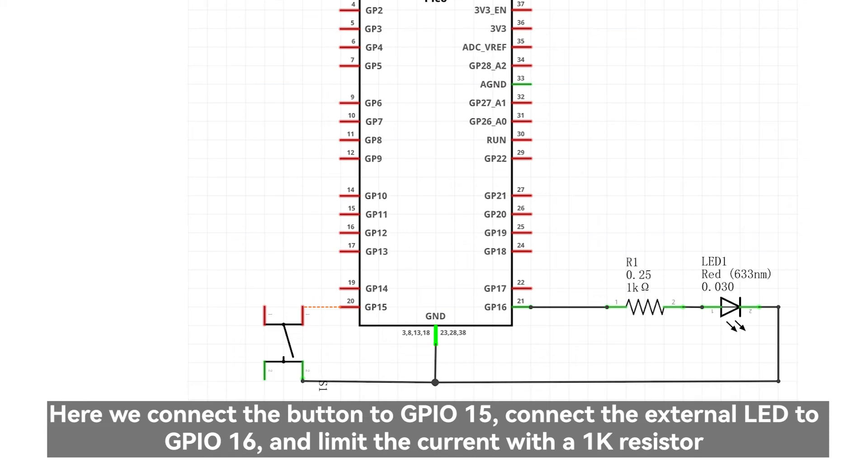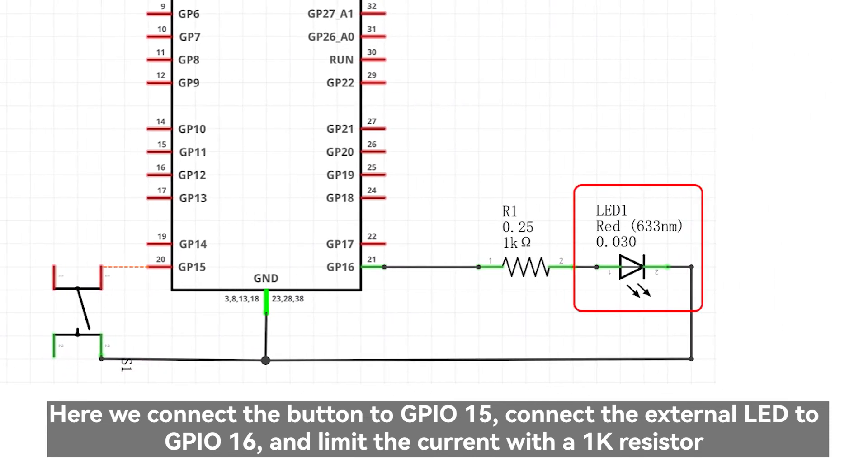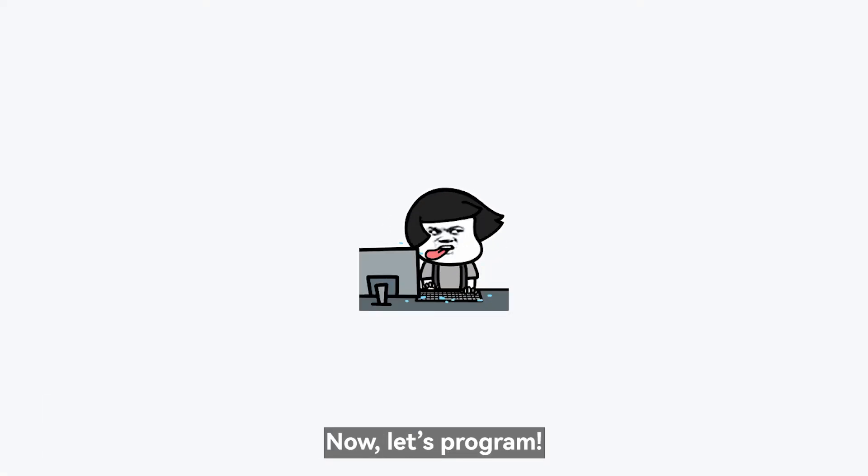Here we connect the button to GPIO 15, connect the external LED to GPIO 16, and limit the current with a 1K resistor. Now, let's program.